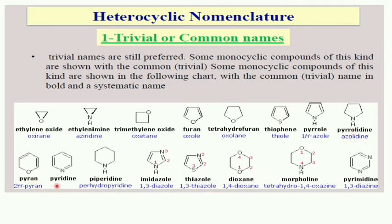Further examples include pyran, pyridine, piperidine, imidazole, thiazole, dioxane, morpholine, and pyrimidine. These trivial names are mostly popular for heterocyclic compounds rather than the IUPAC names.